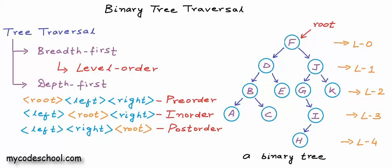There is an easy way to remember these three depth-first algorithms. If we denote visiting a node with D for data, going to the left subtree as L, and going to the right subtree as R, then in pre-order for each node we go D-L-R: first read the data, then go left, then once left subtree is done, go right. In in-order traversal, first finish the left subtree, then read the data in the current node, then go right — L-D-R. In post-order for each node, first go left, once left subtree is done go right, then read the data — L-R-D. So pre-order is data-left-right, in-order is left-data-right, and post-order is left-right-then-data.